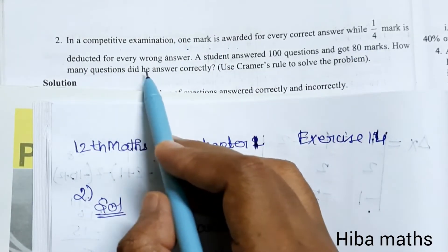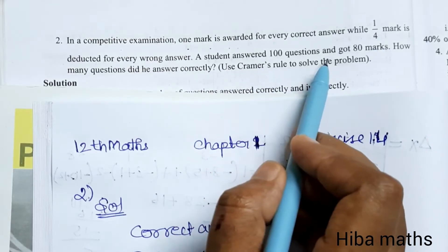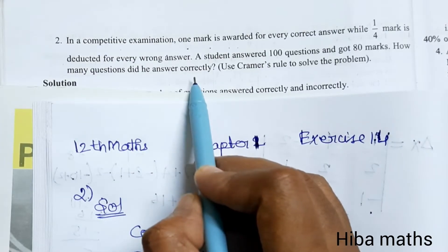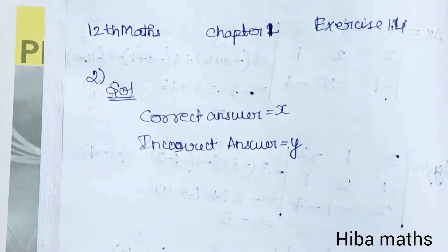...for every wrong answer. A student answered 100 questions and got 80 marks. How many questions did he answer correctly? Use Cramer's rule to solve the problem.